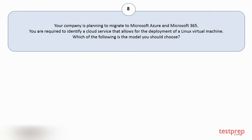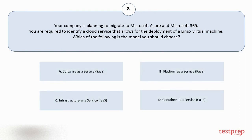Option number eight. Your company is planning to migrate to Microsoft Azure and Microsoft 365. You are required to identify a cloud service that allows for the deployment of a Linux virtual machine. Which of the following is the model you should choose? Your options are: A. Software as a service. B. Platform as a service. C. Infrastructure as a service. D. Container as a service. The correct answer is option C.